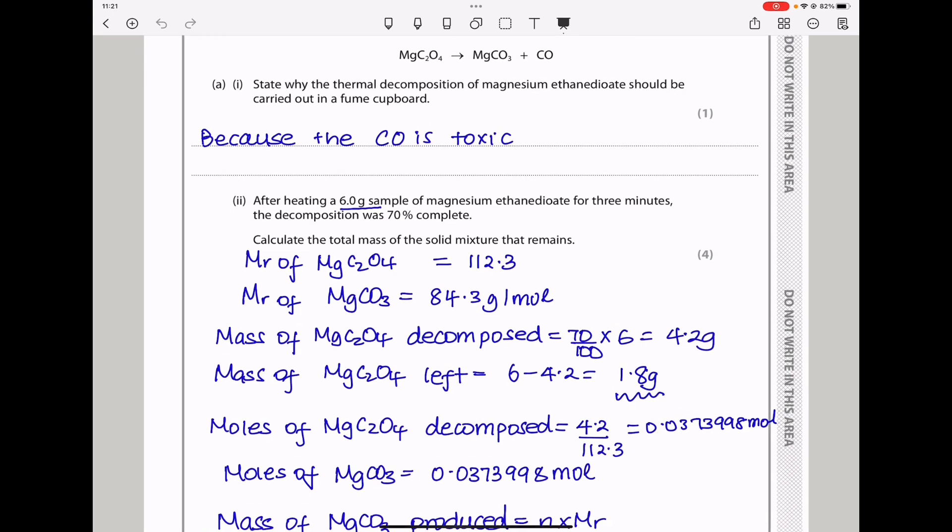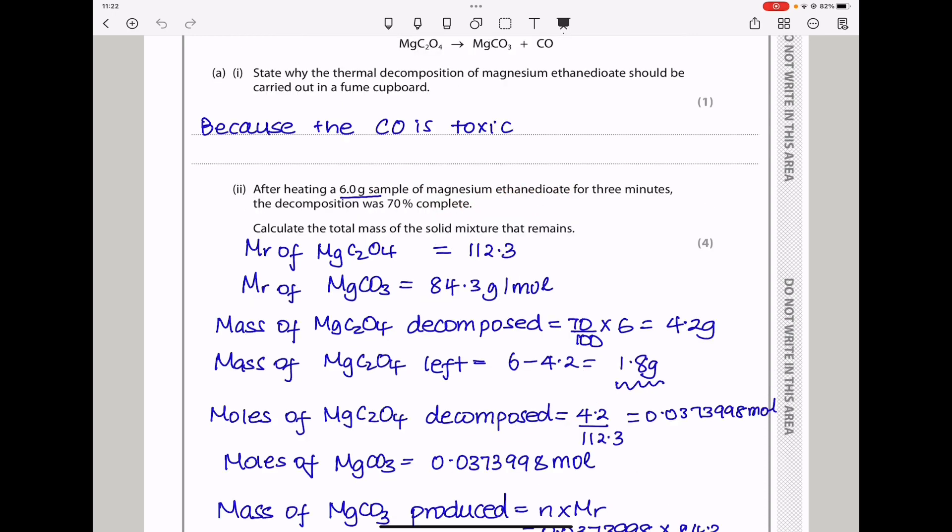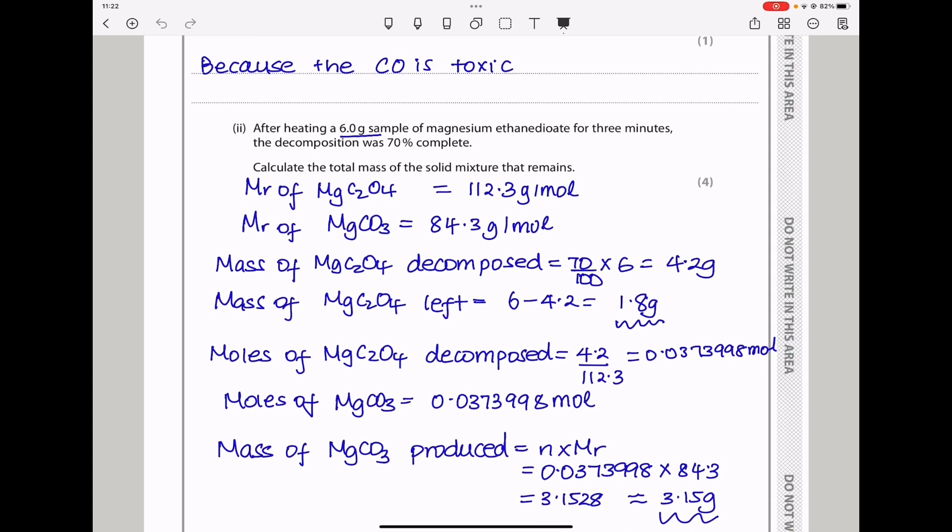The next part says after heating a 6-gram sample of magnesium ethane-di-oate for 3 minutes, the decomposition was 70%. Calculate the total mass of the solid mixture that remains. Remember, they have said 70% complete decomposition. So I began by finding the molar mass of each. Molar mass of this one is that, grams per mol, and the molar mass of this is that, grams per mol.